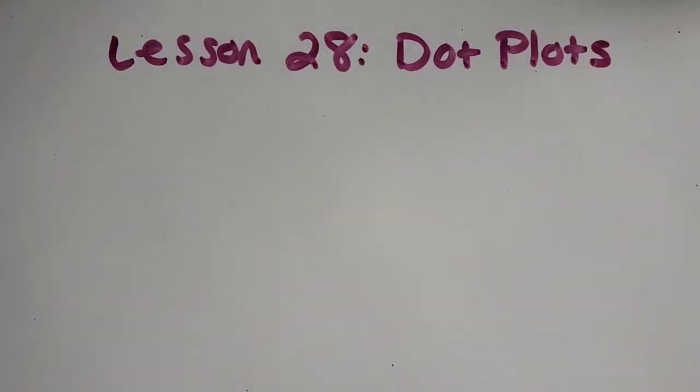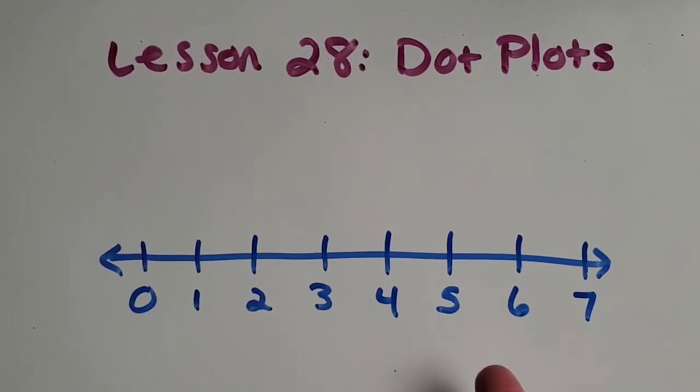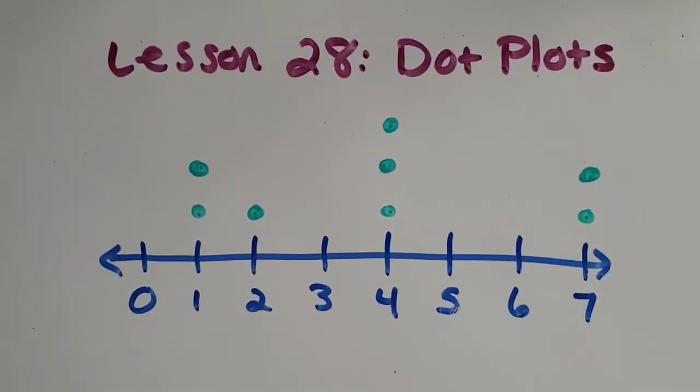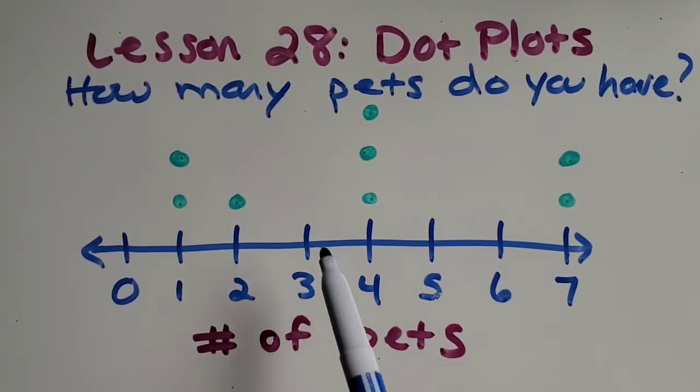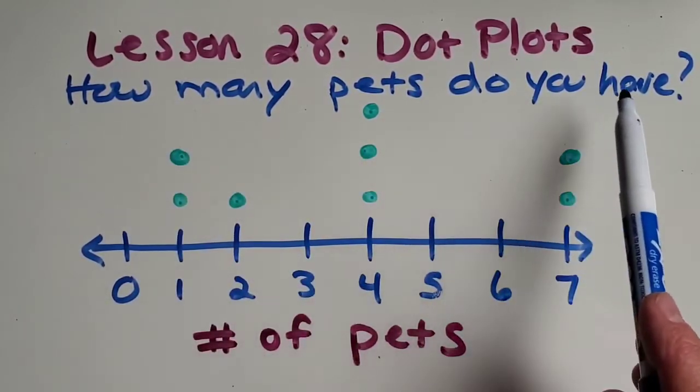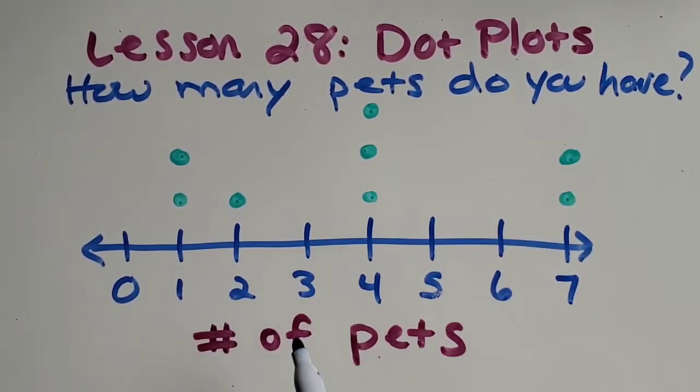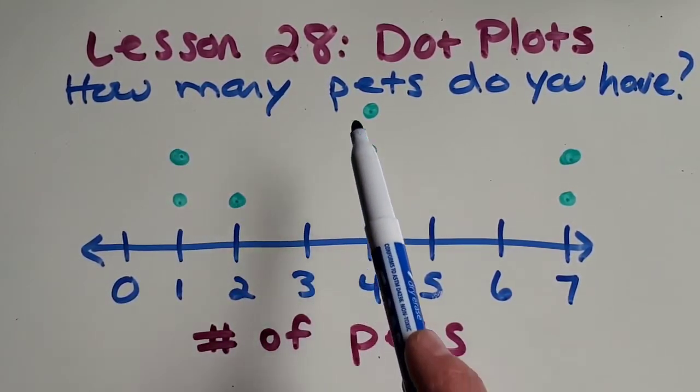Dot plots are as easy as having a number line and some dots and a good label so that we know what the dots represent and a good title so that we know what this is all about. So how many pets do you have? And in this particular dot plot, we collected data on the different number of pets and put them as dots on this number line.